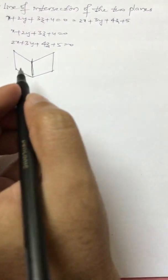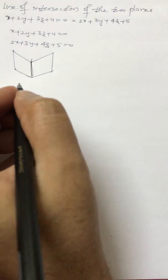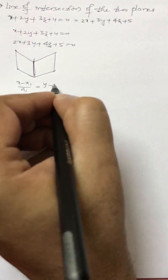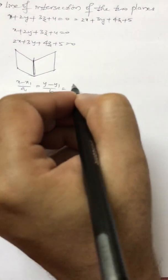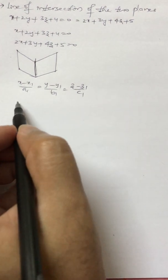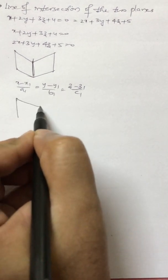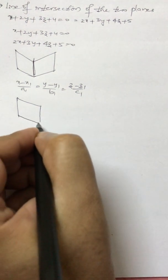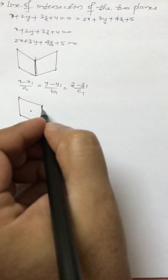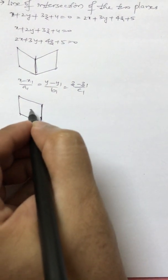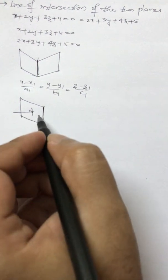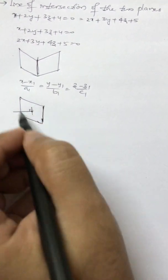If I want to find this line, what I will do is consider the line as: x minus x1 by a1 equals y minus y1 by b1, z minus z1 by c1. This line belongs to the plane, which means the direction ratios of the line and the direction ratios of the normal to the plane are perpendicular, because the normal is perpendicular to all the lines in the plane.